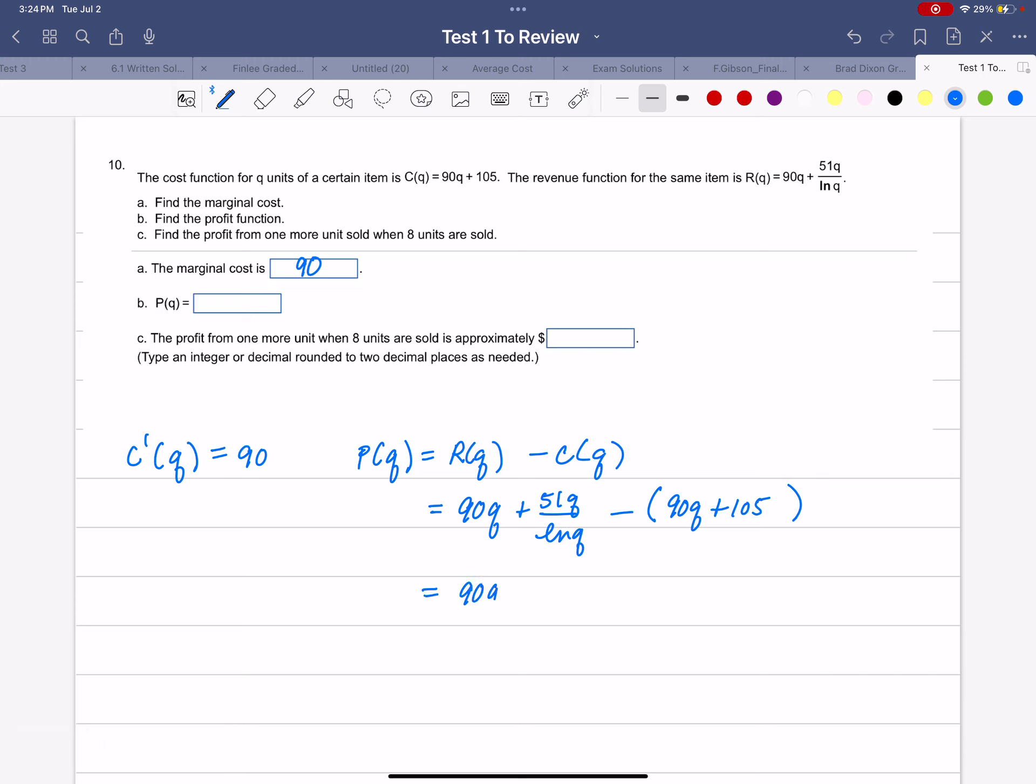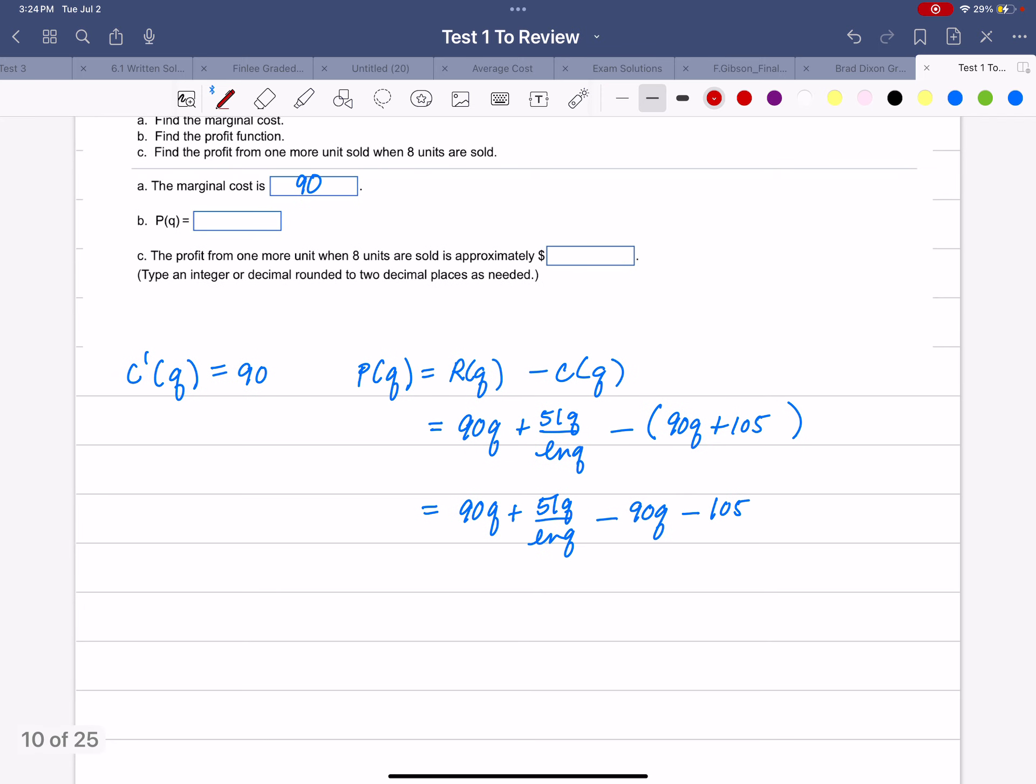So it's 90Q + 51Q/ln(Q) - 90Q - 105. You'll miss that sign on that 105 if you're not careful. The 90Qs add to zero.